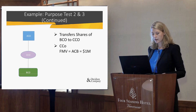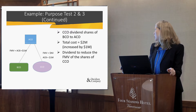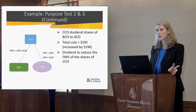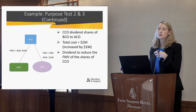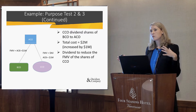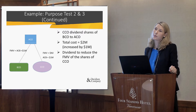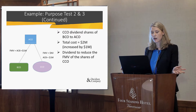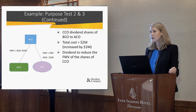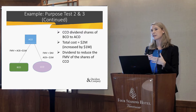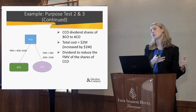At this point we don't really have a problem because we haven't paid a dividend yet. Next, Company C decides to pay out the Company B shares to Company A as a dividend. Due to the way the rules work, the Company B shares have full cost value equal to fair market value — cost base and fair market value of $1 million. But this dividend didn't reduce the cost base of the Company C shares; it just reduced the fair market value. So you've fallen into purpose test number two.